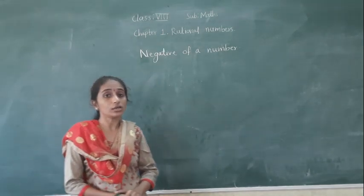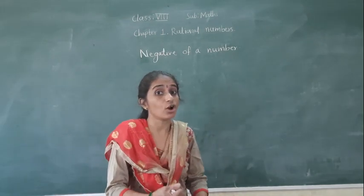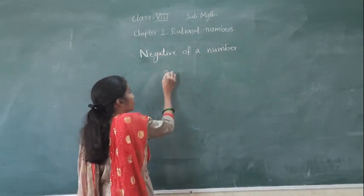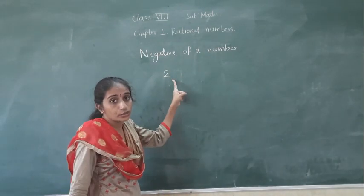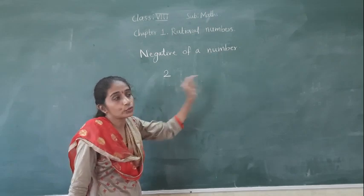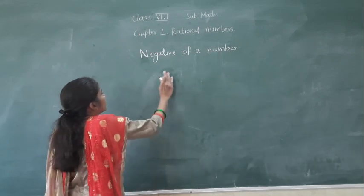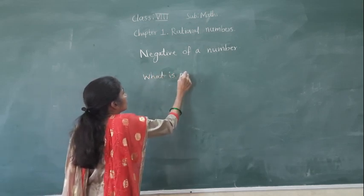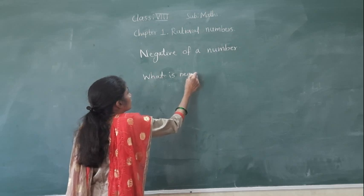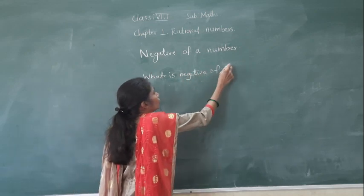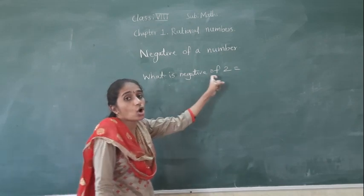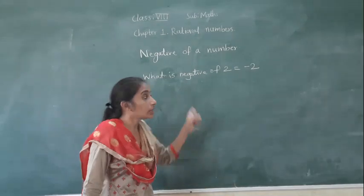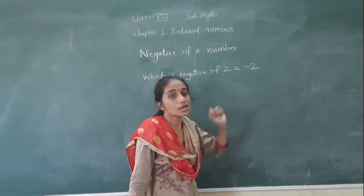Let's see the negative of a number. What is the negative of a number? Suppose if I have written any number on the board — suppose if I have written 2. What is the negative of 2? Negative of 2 is minus 2.